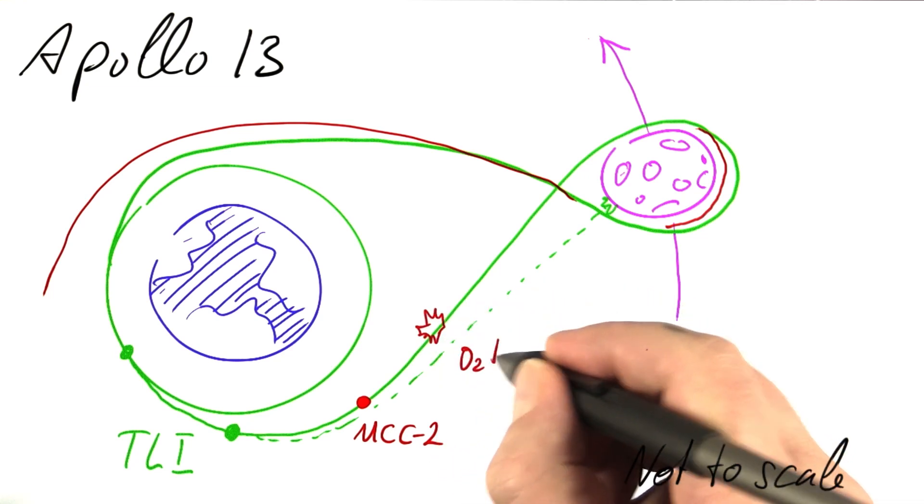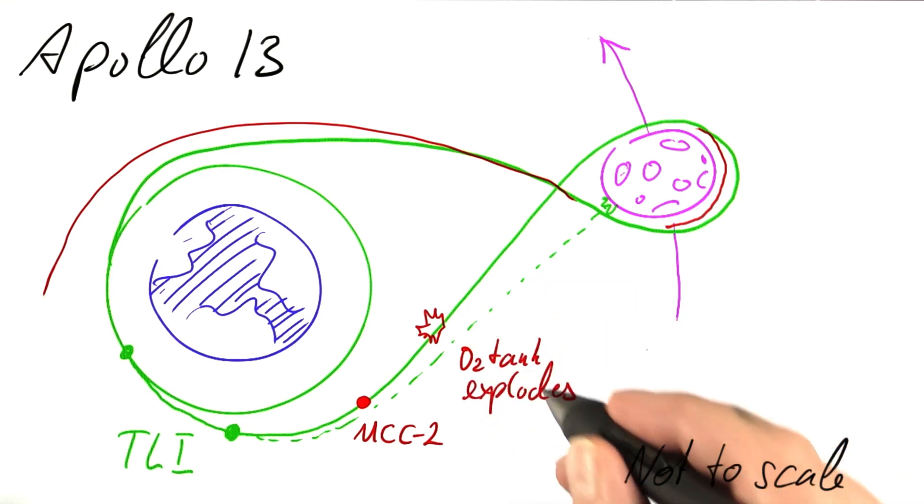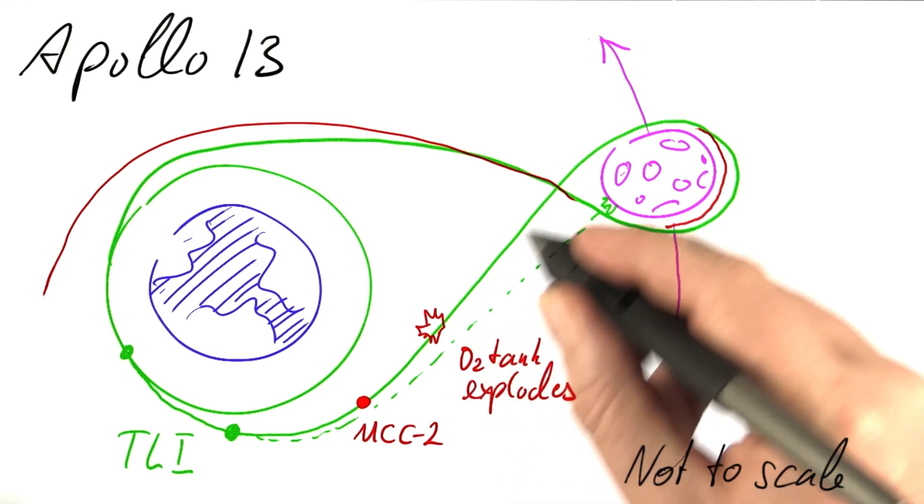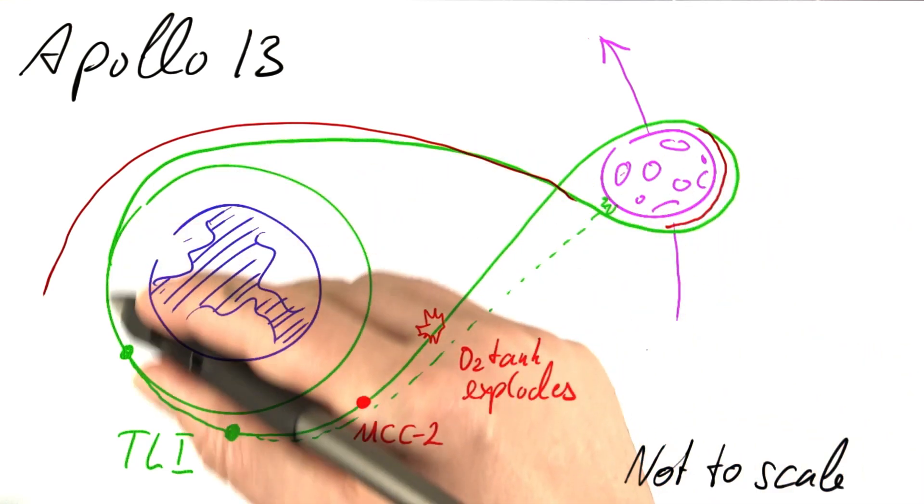when one of the O2 tanks exploded. Now the spacecraft had to be taken back to Earth as quickly as possible.